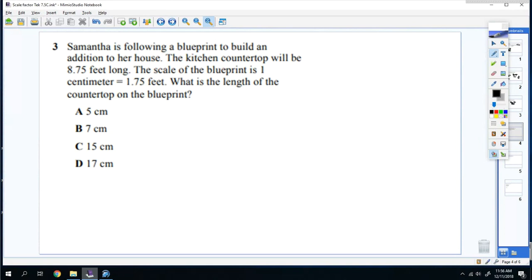Number three. Samantha is following a blueprint to build an addition to her house. The kitchen countertop will be 8.75 feet long. The scale of the blueprint is one centimeter for every 1.75 feet. What's the length of the countertop? So you have one centimeter over 1.75 feet. Then this is 8.75 feet on the bottom.